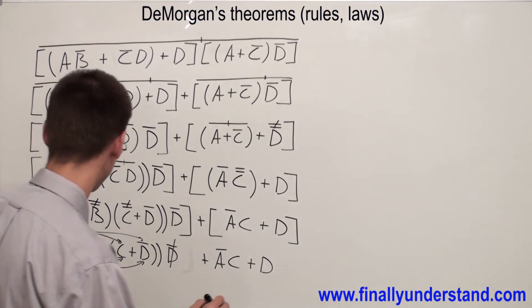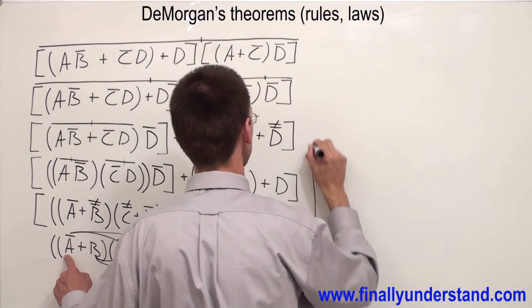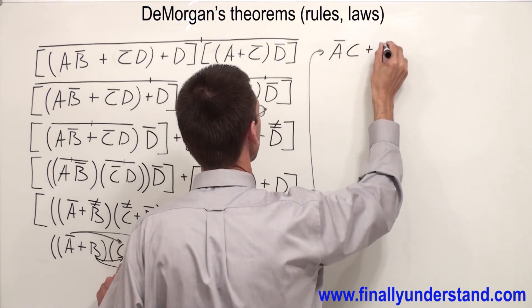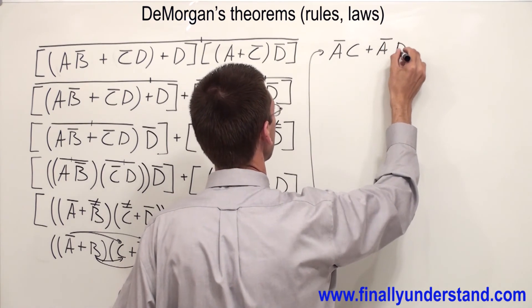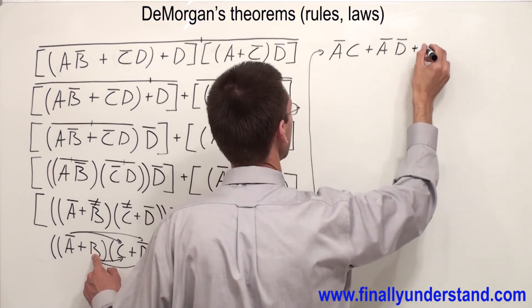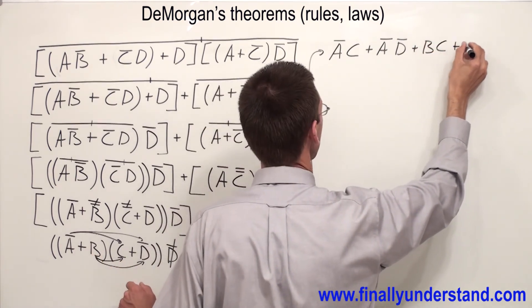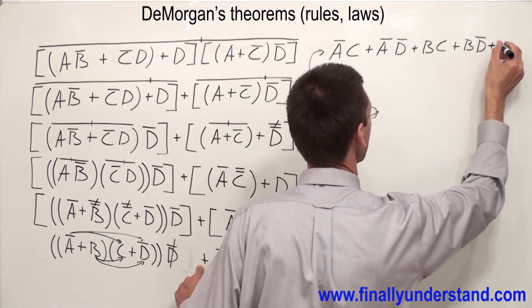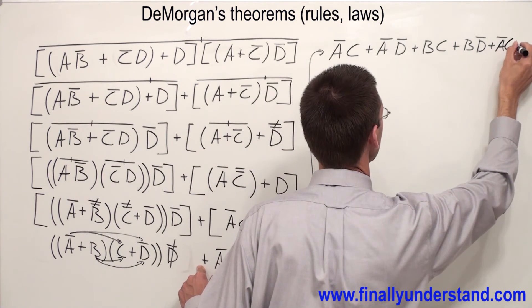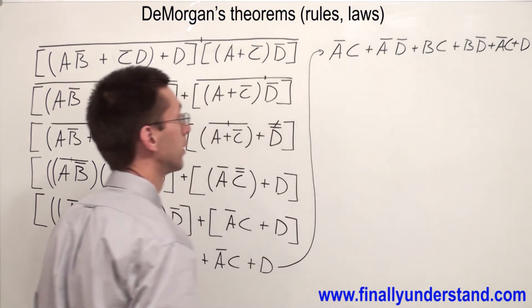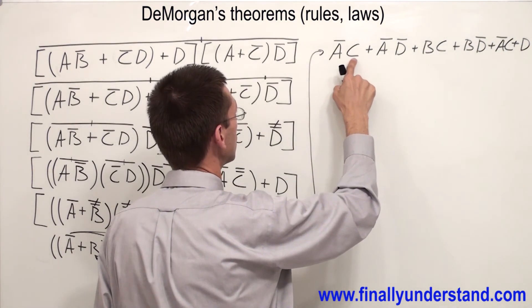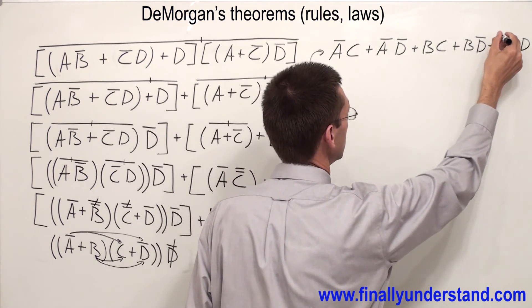That's why I'm going to get: ĀC OR ĀD̄ OR BC OR BD̄ OR D. Then also: ĀC OR B, OR D. Let's take a look at what we can simplify. Please notice that I have ĀC and I have ĀC — one of them can be dropped out.